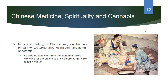In the second century, the Chinese surgeon Hua Tuo, circa 175 AD, wrote about using cannabis as an anesthetic. He created a powder, mixed it with wine for the patient to drink before surgery, and called it 'ma you.' There is a picture of Hua Tuo supposedly working on a patient and conducting surgery after having given him this anesthetic.